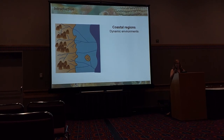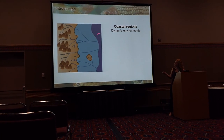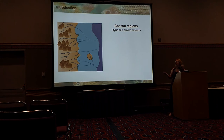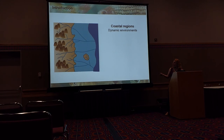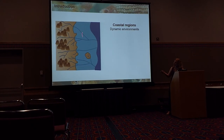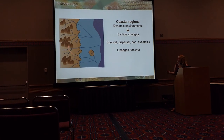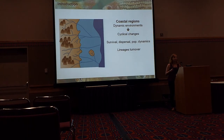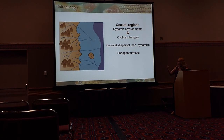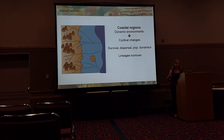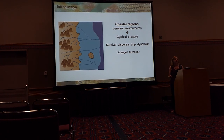What basically happened is — imagine that during the Pleistocene, we have sea level changes. During periods when the sea level went down, we have larger connections between the rivers. And then when the sea level went up to the current coast, we have isolation of the populations. This happened cyclically over the Pleistocene, with the sea level going up and down in different amounts, leading to very cyclical changes. These cyclical changes over the Pleistocene are going to affect the survival, the dispersal, and the population dynamics of organisms in that sense.